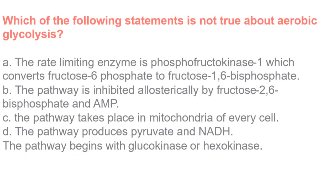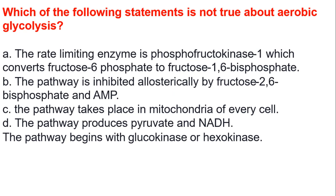Let's quickly move on and look at the next question. Which of the following statements is not true about aerobic glycolysis? A, the rate-limiting enzyme is phosphofructokinase, which converts fructose-6-phosphate to fructose-1,6-bisphosphate. B, the pathway is inhibited allosterically by fructose-2,6-bisphosphate and AMP. C, the pathway takes place in mitochondria of every cell. D, the pathway produces pyruvate and NAD. And the pathway begins with glucokinase or hexokinase.